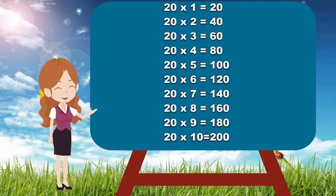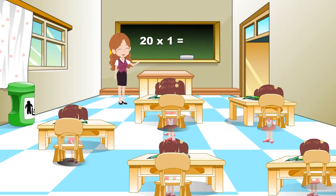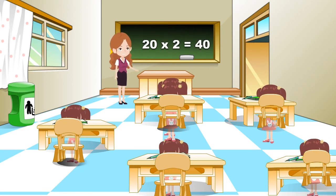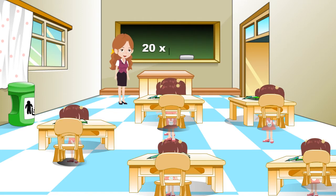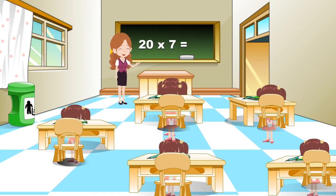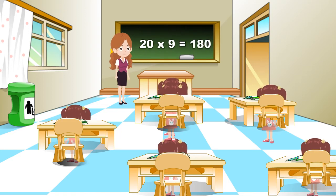repeat this table with me. 20×1 is 20. 20×2 is 40. 20×3 is 60. 20×4 is 80. 20×5 is 100. 20×6 is 120. 20×7 is 140. 20×8 is 160. 20×9 is 180.